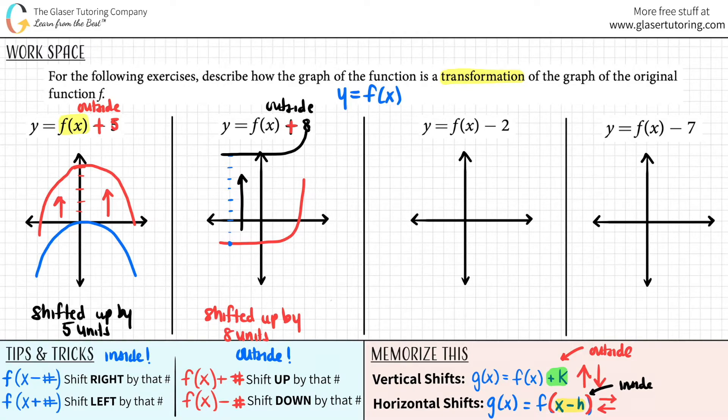Okay. Next one. I have a function, f of x minus two. I have a function and then I have a minus two on the outside of the function. So this is also a vertical shift, but it's a negative now. And a negative is shifting downward. So all you have to say is you shifted down by two units.